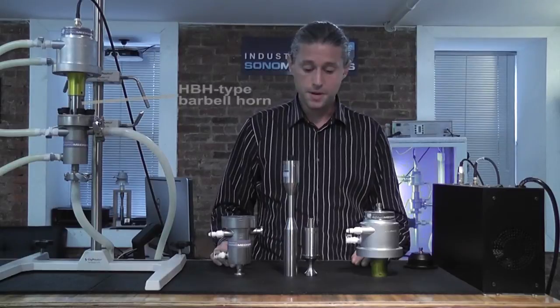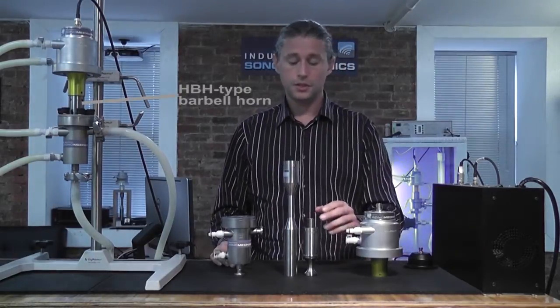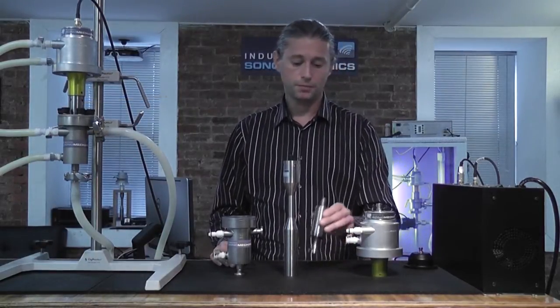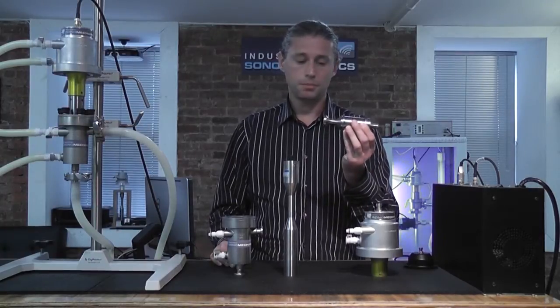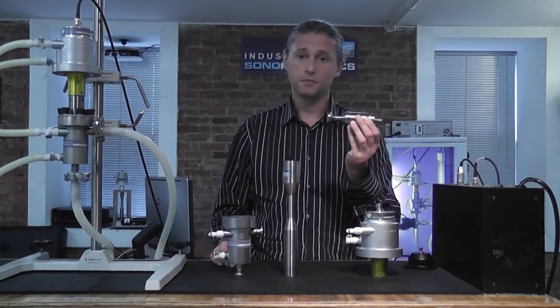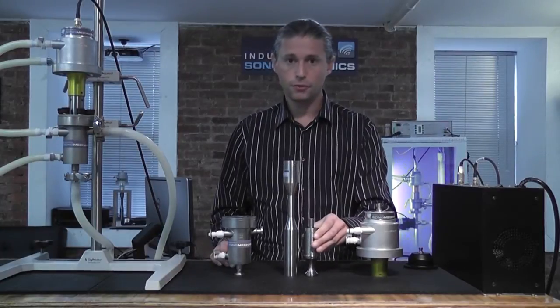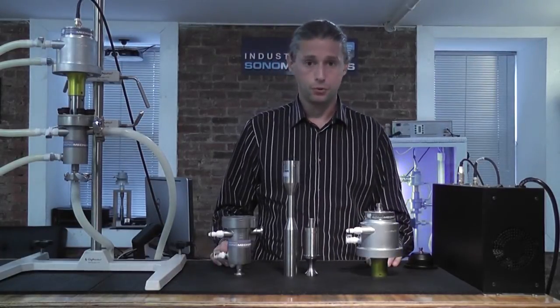Component number three is the barbell horn. There are several types of barbell horns available. The most commonly used type is the HBH or half-wave barbell horn. This is used for flow-through processing.